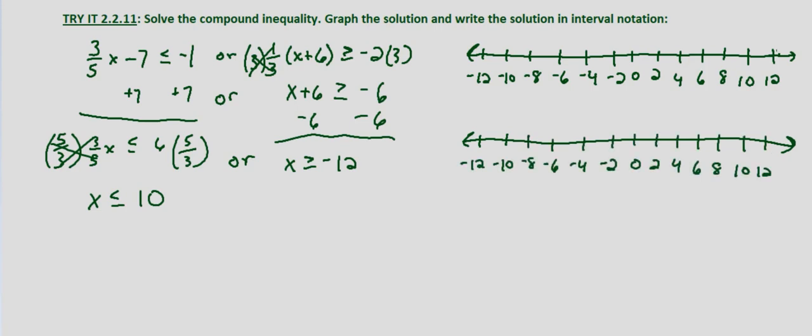Alright, now we'll graph the left-hand side of our compound inequality. x is less than or equal to 10. I'll go ahead and use a square bracket this time. We can use a square bracket or a closed circle, a dot. And it's less than or equal to, so we're going to the left. On the right-hand side, we have x is greater than or equal to negative 12. So again, I'll put a bracket here. Greater than or equal to, we go to the right.